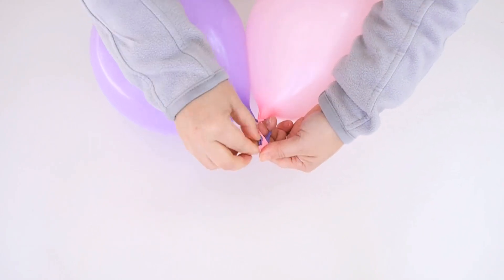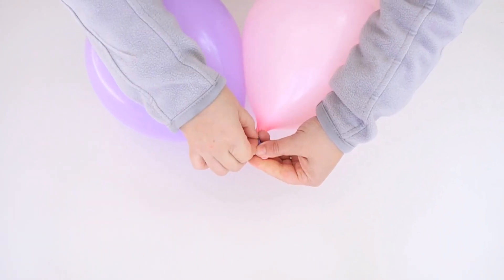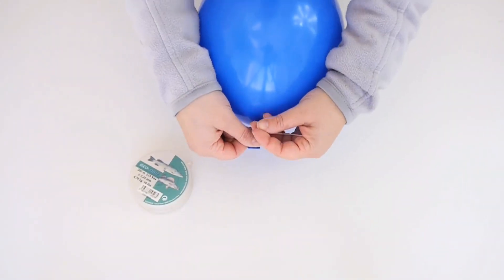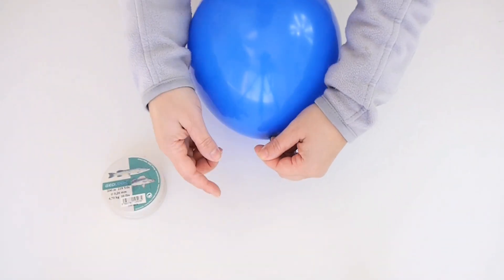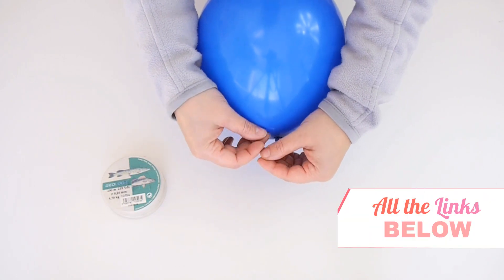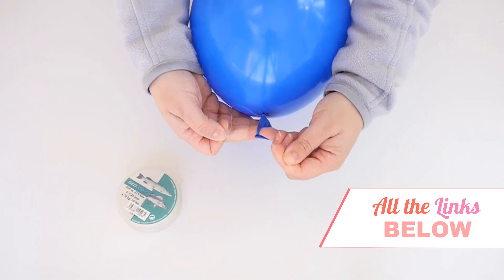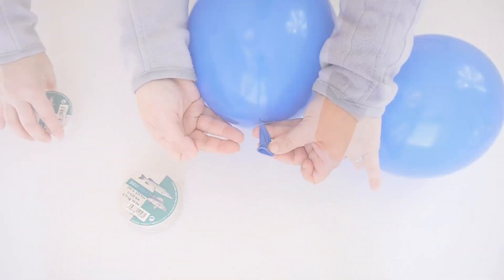We're going to start at one end by tying a piece of fishing line to a single balloon. This will start our garland and prevent the fishing line from slipping off, securing the balloon garland at one end. I'm using fishing line because it's transparent and really strong. Then you're going to take a pair of balloons that you inflated previously and tie the fishing line around them to secure them.